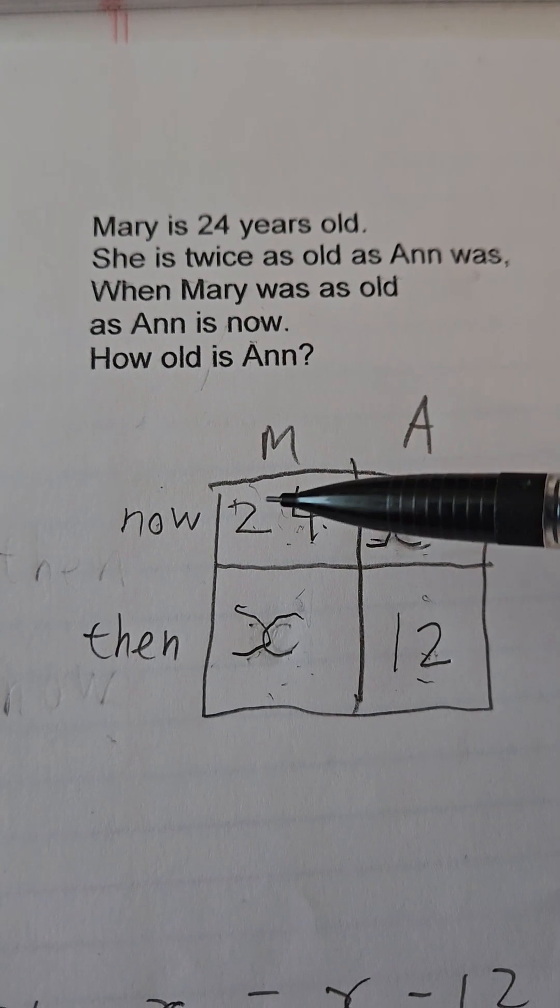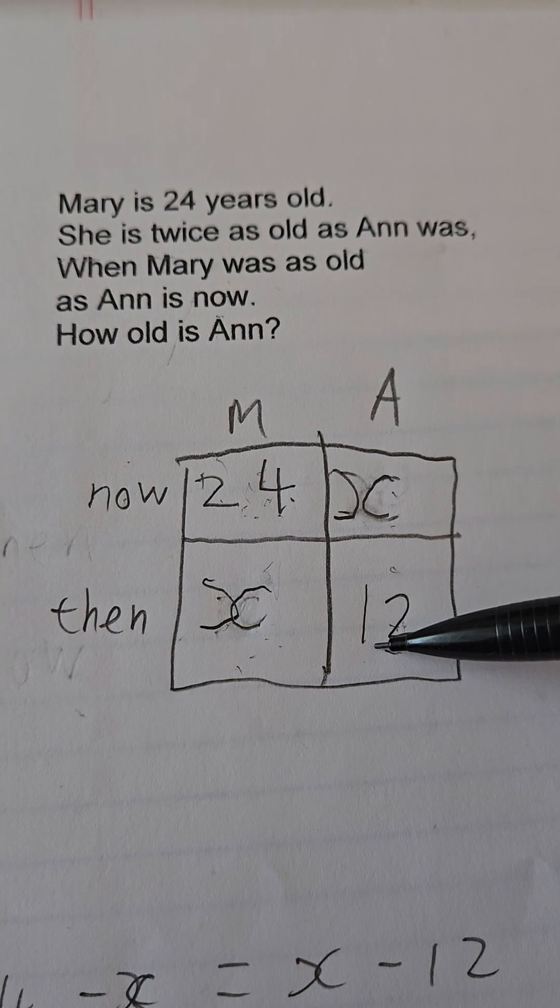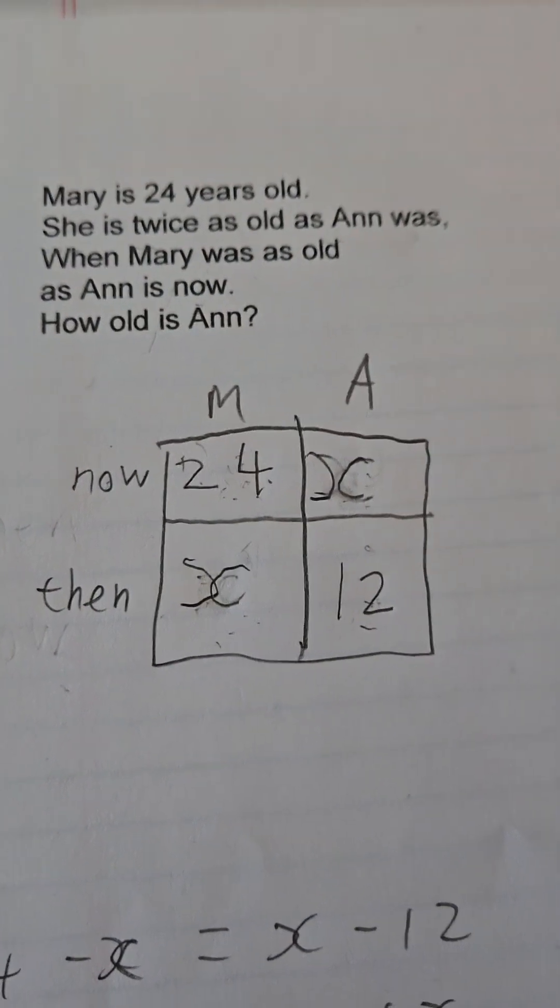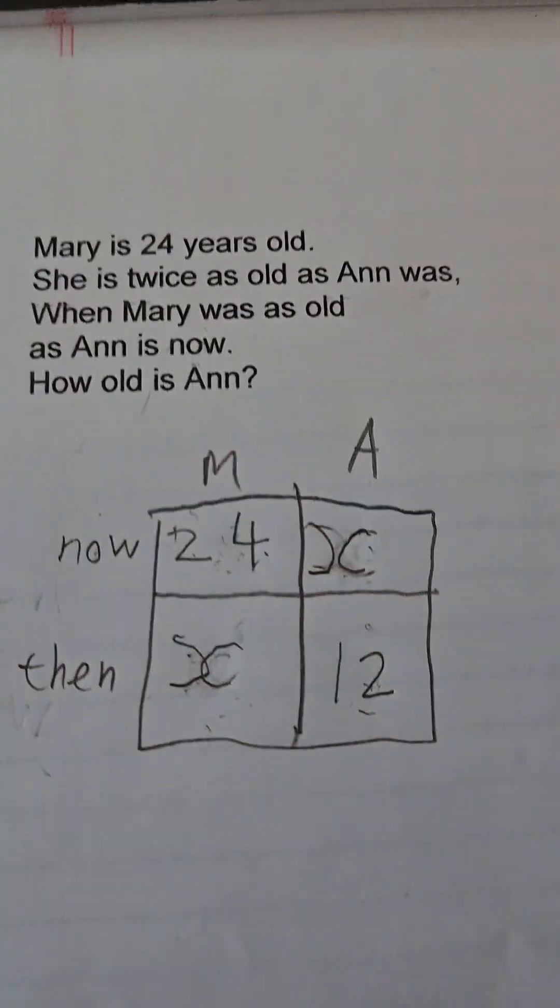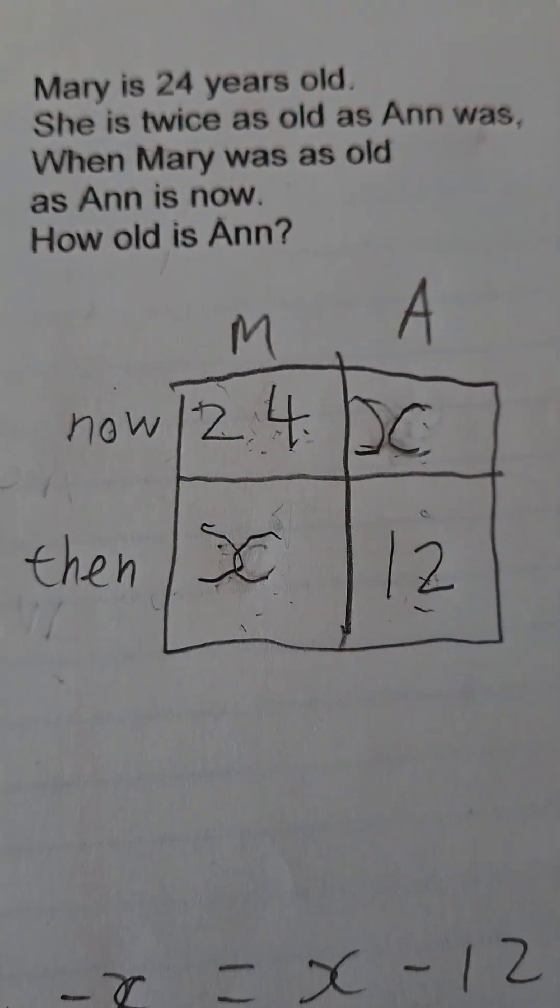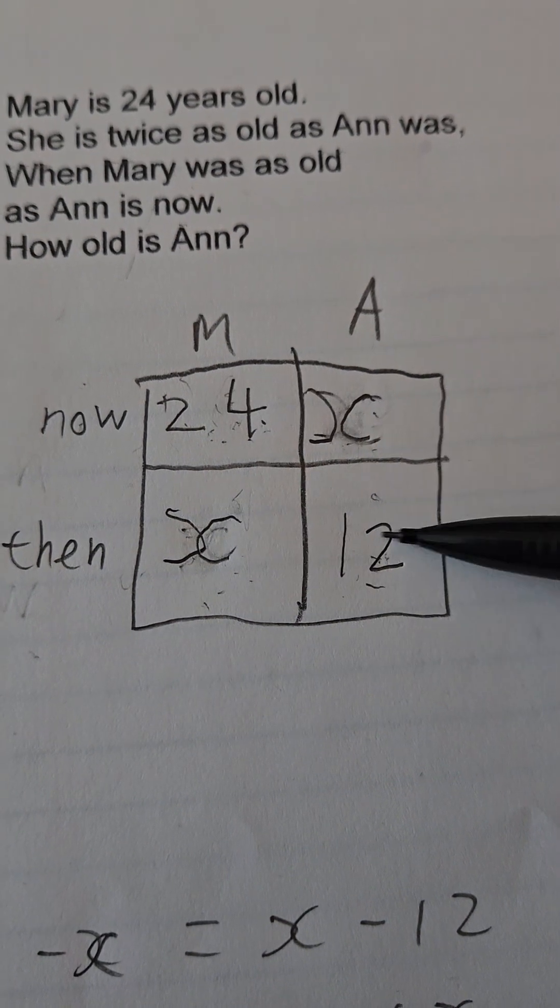Now I'm going to read what it says. Mary's 24. She's twice as old as Anne was when Mary was as old as Anne is now. Perfect. From here, how old is Anne? Well one thing I do know, we still don't know how many years elapsed between now and then. But what I do know is it's the same number of years for each person.